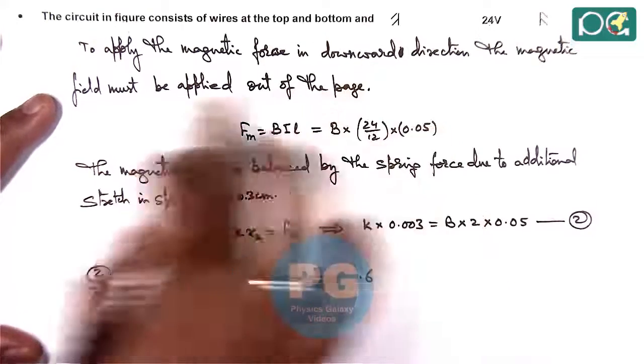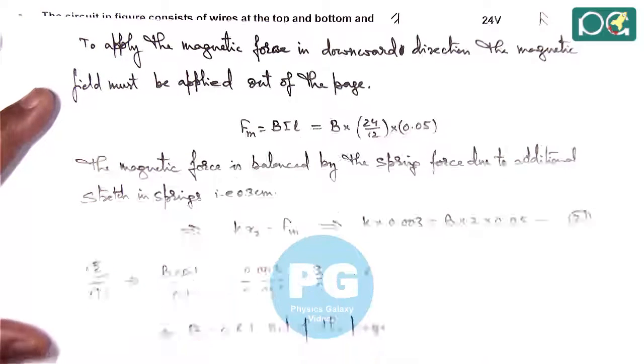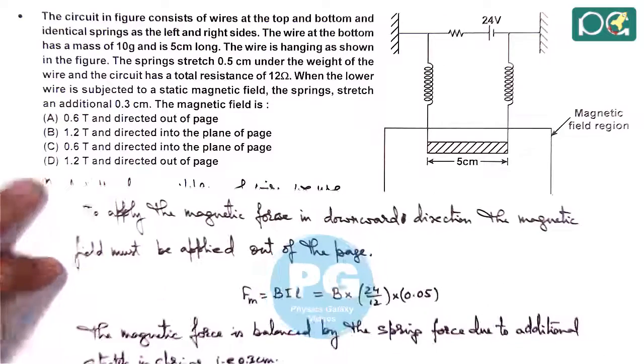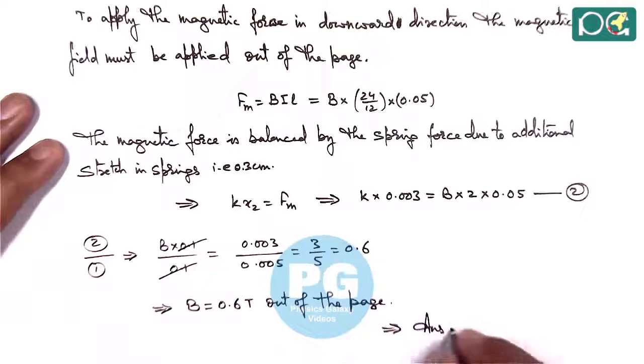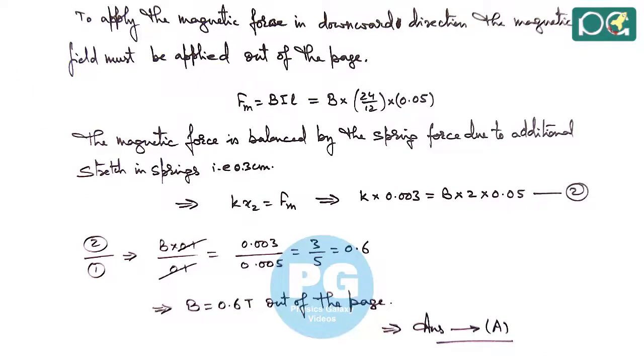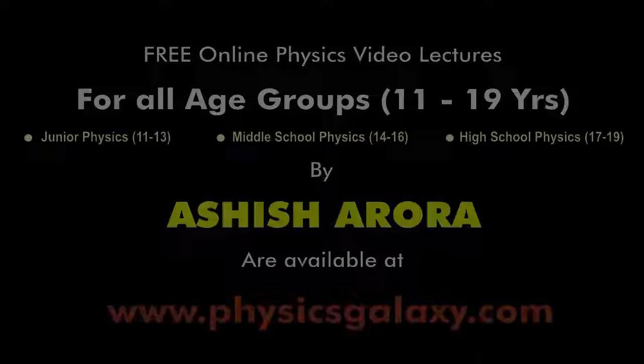So this gives us the value of magnetic induction as 0.6 tesla, and the direction we already checked must be out of the page. So here we are getting the answer to this question would be option A, 0.6 tesla.